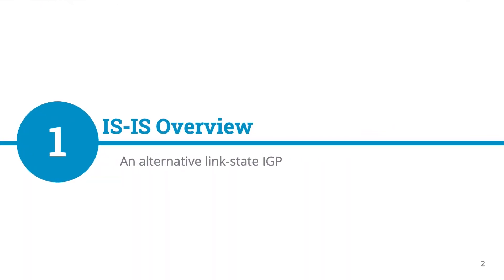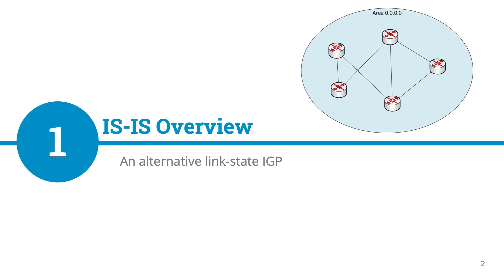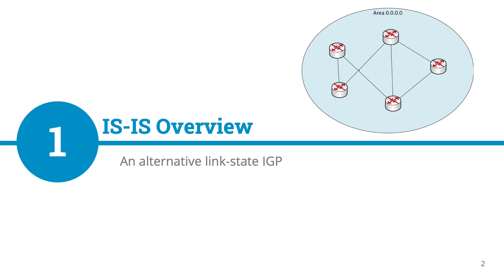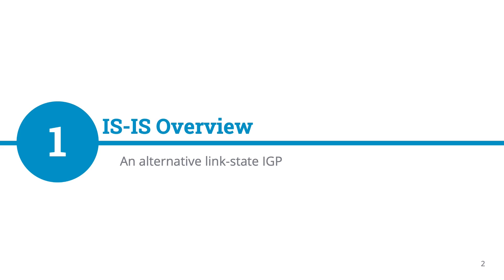In this lesson, we'll be covering an overview of ISIS, or Intermediate System to Intermediate System. Most network administrators and engineers are familiar with OSPF as a link-state protocol, which we learned in a previous lesson means that each participating node builds a map of the network to calculate the least-cost path to any destination. ISIS is another link-state protocol, which I generally find far fewer engineers are familiar with. In this lesson, we'll set you apart from the pack and start learning about ISIS.